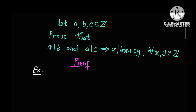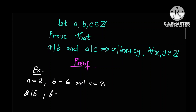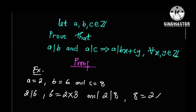If we consider a to be 2, b to be 6, and c to be 8, then we can observe that 2 divides 6, since 6 can be written as 2 times 3, and that 2 divides 8, since it can be written as 2 times 4.